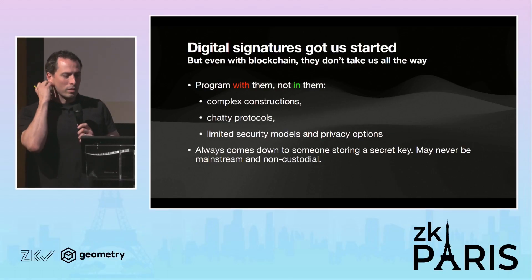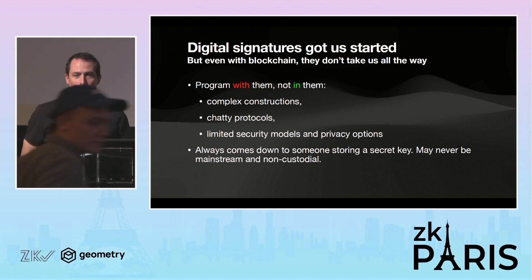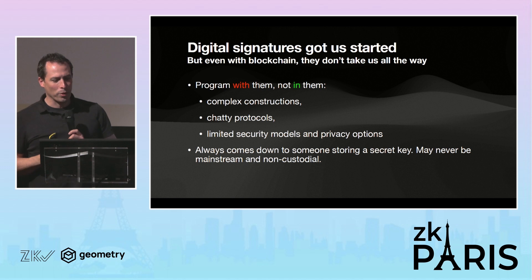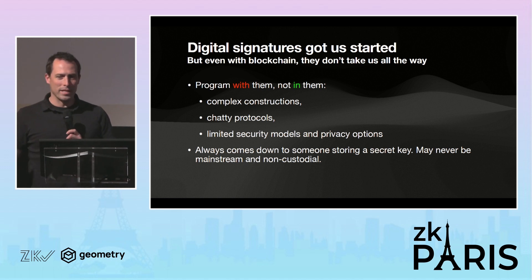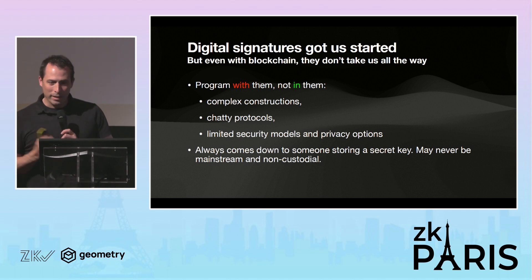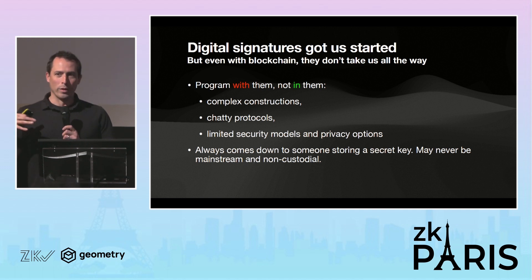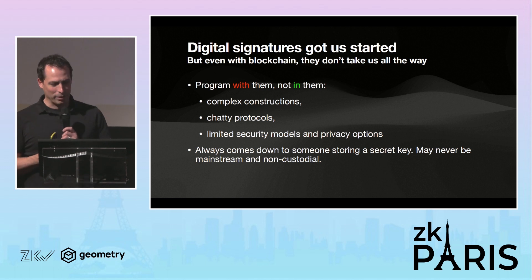I'll start with some motivation. Digital signatures are kind of what got us started and excited about blockchain, but they don't really take us all the way we'd like to go. We're forced to program with digital signatures, not in signatures, leading to fundamentally complex constructions — lots of authorizations, deauthorizations, and trees of inference that could be replaced by zero-knowledge proofs. ZK is slow, but it doesn't have those fundamental speed-of-light limits, so eventually it will be faster. And we have limited security models and privacy options that always come down to somebody storing a secret key, which may never get us to the mainstream.